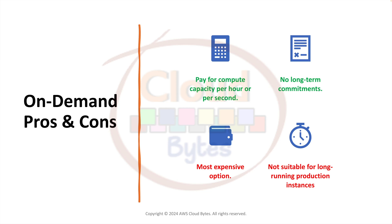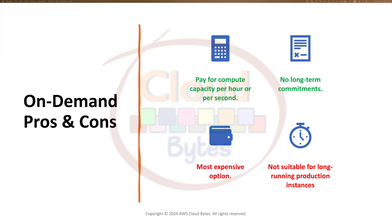Let's look at on-demand. Whenever you need something like an EC2 instance, you can spin up a new EC2 instance and you pay for whatever time it is up and running. The on-demand pricing model is the default for AWS EC2 compute services. AWS charges per hour or by the second, with a minimum of a 60-second block.